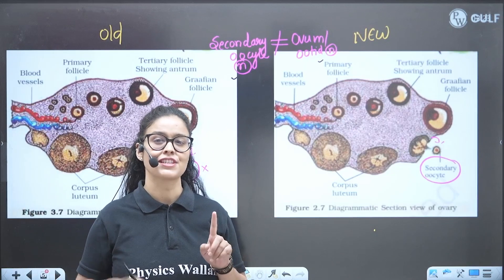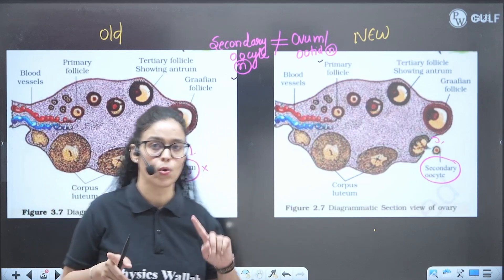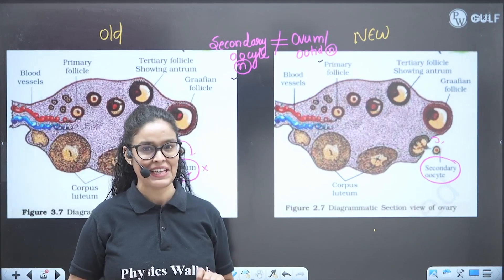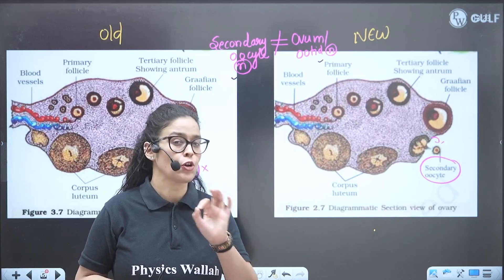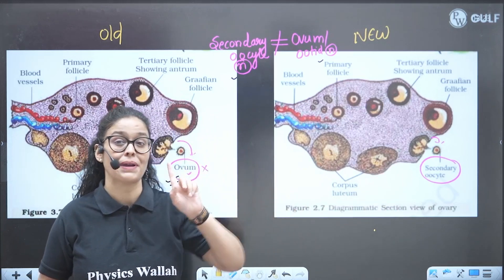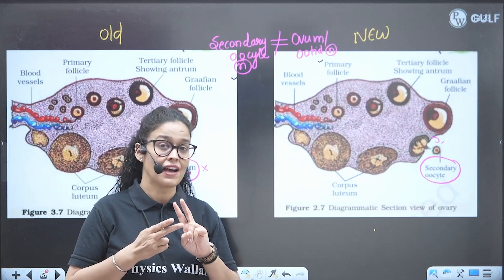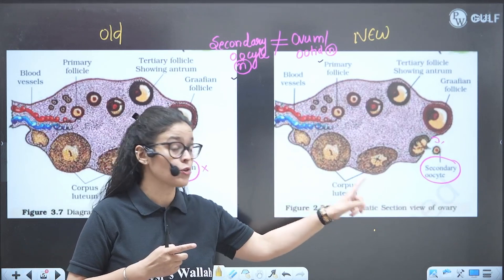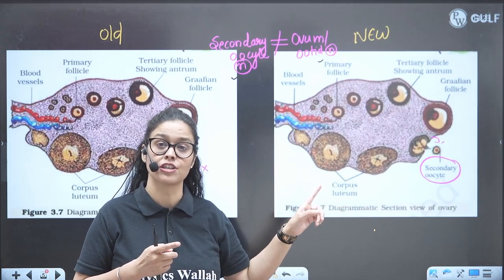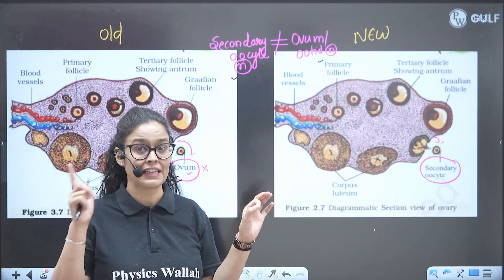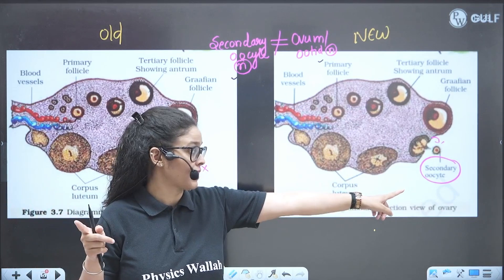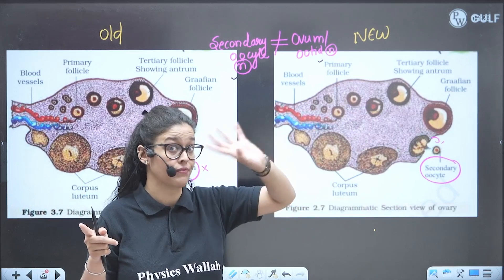So Maria, lovely student — first change: in your old NCRT, they wrote that during ovulation, ovum is released. That's absolutely incorrect because during ovulation, it's secondary oocyte, not ovum at all. If they ask you in the exam, you will be writing secondary oocyte even this year. Because if you look at previous year questions, they have asked a similar question in past NEET and the answer is secondary oocyte.